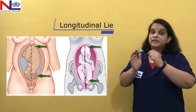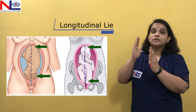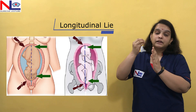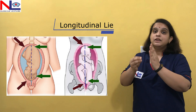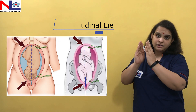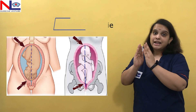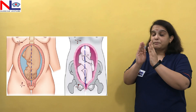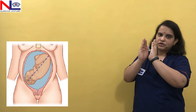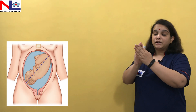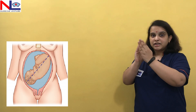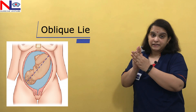The long axis of the fetus runs from head to buttock, and the long axis of the uterus runs from the fundal region to the cervical region. If both the mother's long axis and the fetal long axis are parallel or in a vertical line, that is the longitudinal lie. But if the fetus's long axis is slightly tilted in either direction — at a 45-degree angle — then this lie is called oblique lie.